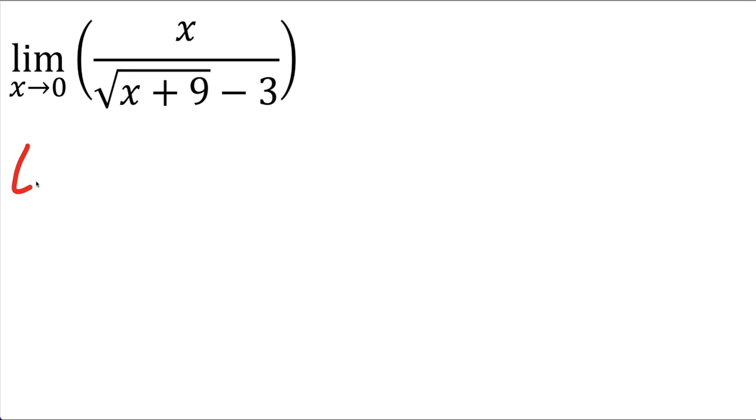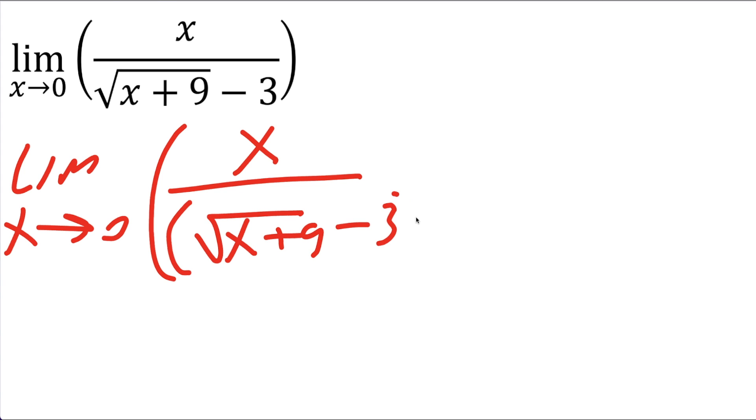So we would get limit of x approaching 0, we'll keep our parenthesis, x divided by, I'm going to put a parenthesis here, square root of x plus 9 minus 3, close parenthesis, and I'm going to multiply by the conjugate. I'll show you what that means.